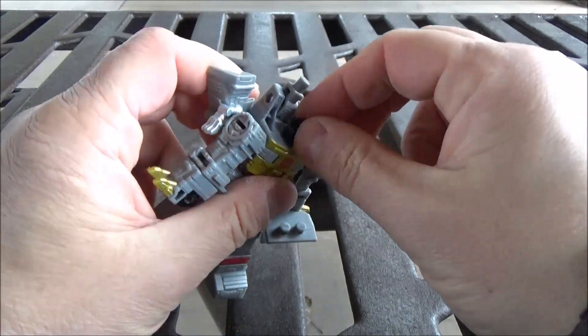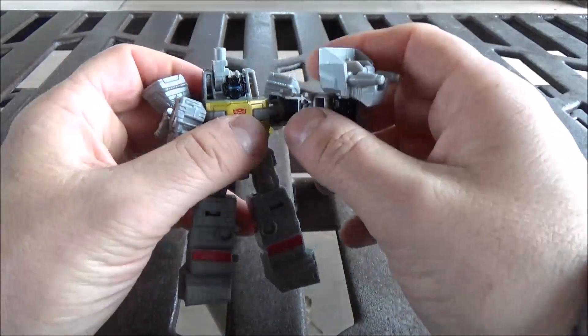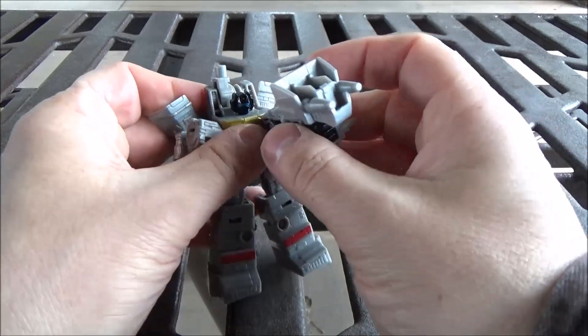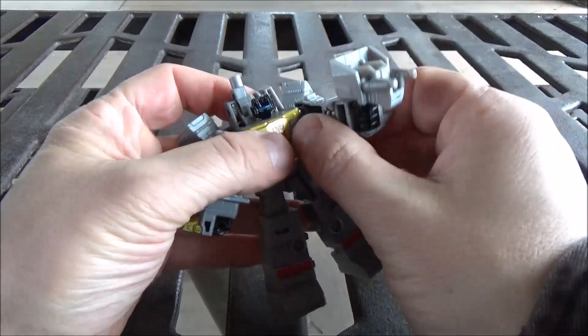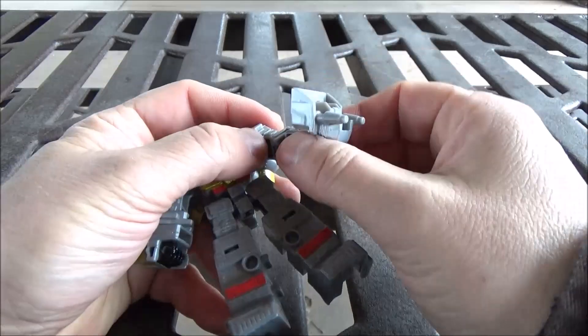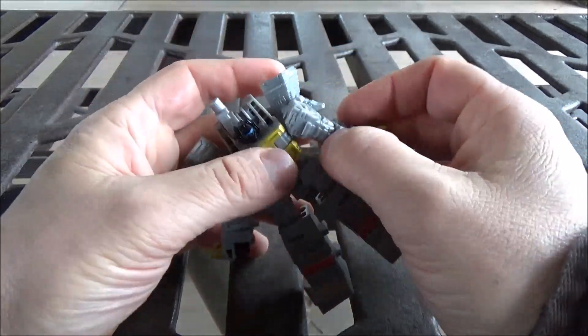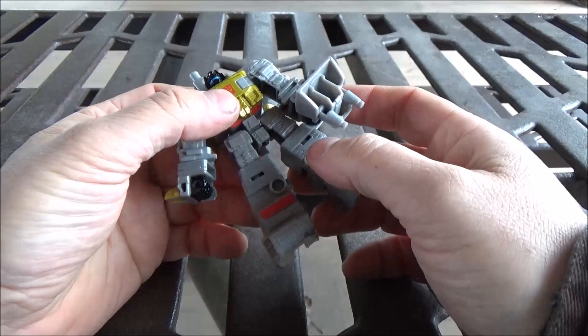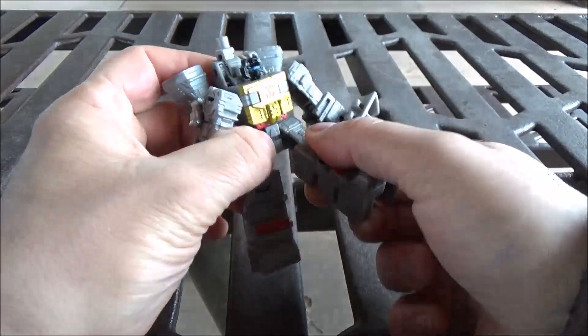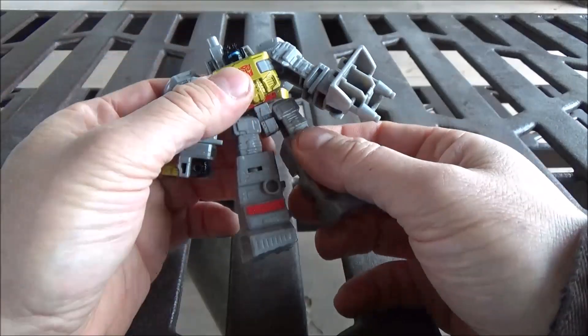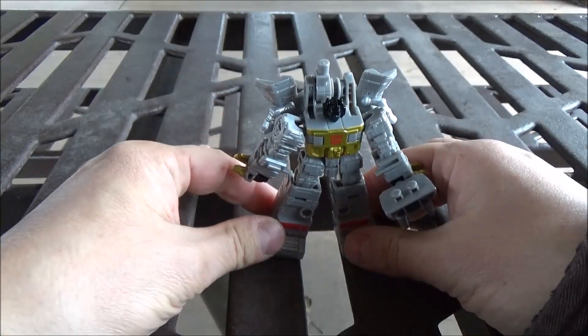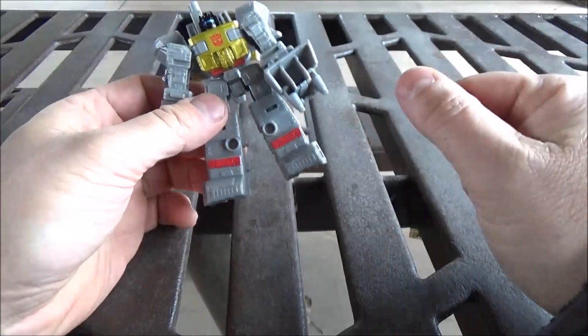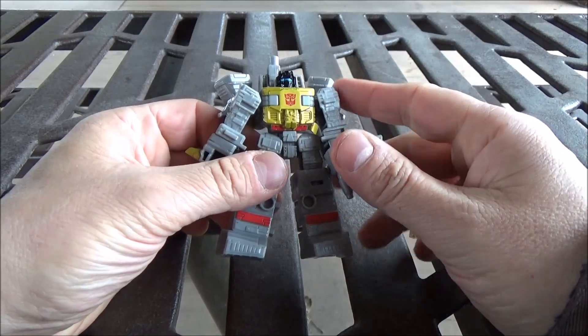Moving on to articulation here. The head does rotate. Arms are on a ball joint. They also have this forward moving joint, but that's for the combined mode. Wrists do rotate. Nothing in the elbows. No waist swivel, ball jointed hip, and ball jointed knees. With a preset tilt. So, there is articulation to be had, but not much.